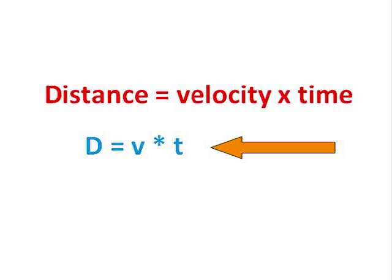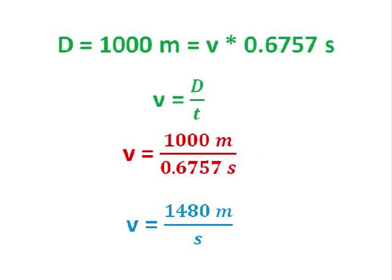They insert these numbers in their formula. Capital D equals V times T. Or, D equals 1,000 meters equals V times 0.6757 seconds. Solving for V, we rewrite the formula as V equals capital D over T, or V equals 1,000 meters divided by 0.6757 seconds. We calculate that V is 1,480 meters per second.